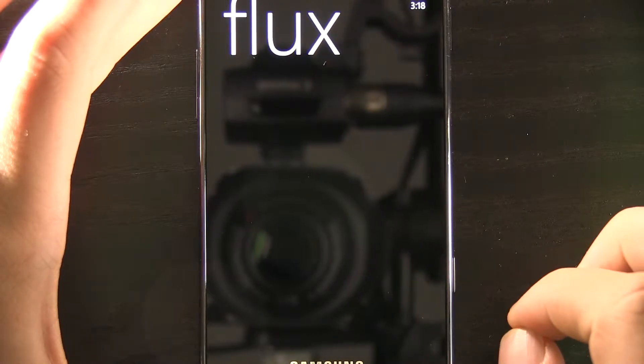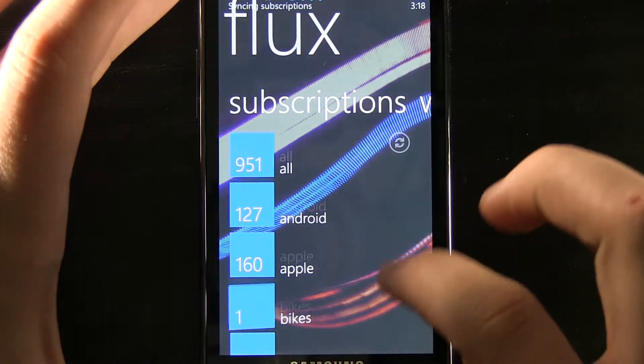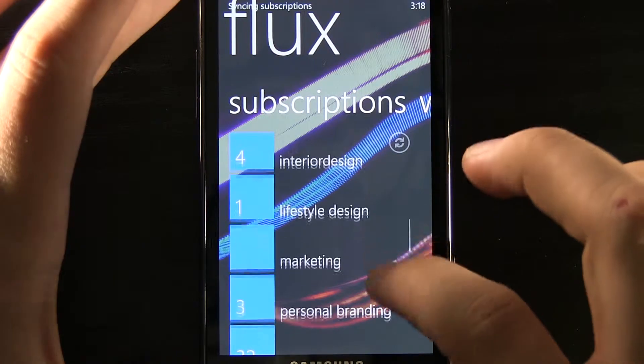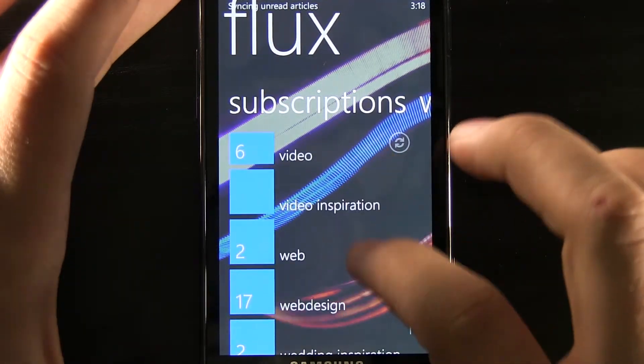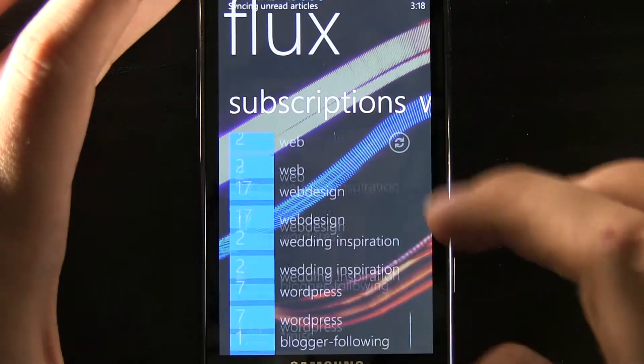So with Flux, you simply download this application and then log into your Google Reader account. If you don't have a Google Reader account, go to google.com/reader and set up an account, add some websites to it, and from your Google Reader, it even gives you recommendations and cool stuff like that.